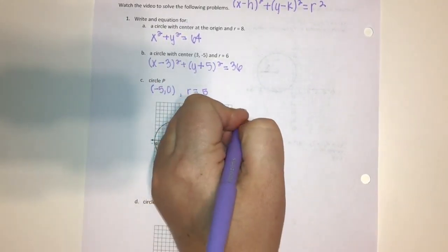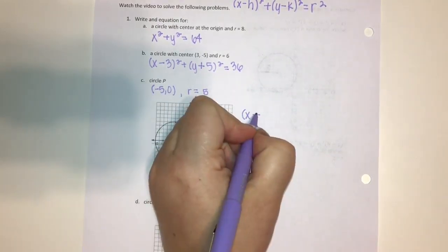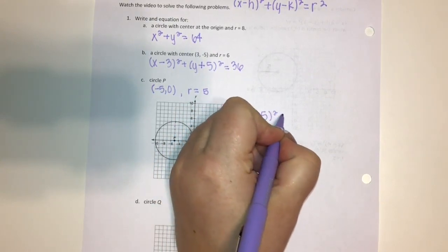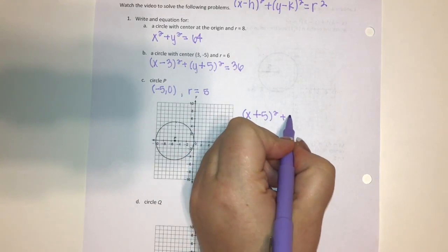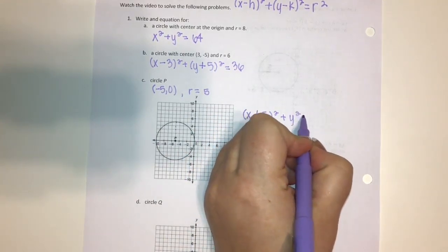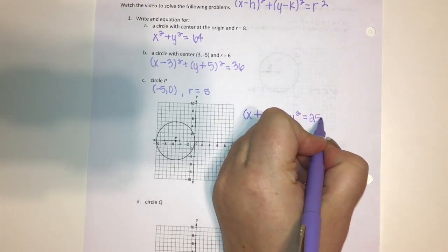The equation would be x minus -5, so (x + 5)², plus I'm just going to have y² because my zero makes that k go away. And then my radius is 5, so 5² is 25. The equation is (x + 5)² + y² = 25.